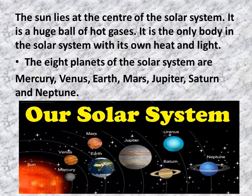The Sun lies at the center of the Solar System. It is a huge ball of hot gases. It is the only body in the Solar System with its own heat and light. The 8 planets of the Solar System are Mercury, Venus, Earth, Mars, Jupiter, Saturn and Neptune.